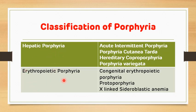Examples of hepatic porphyria are: first, acute intermittent porphyria; second, porphyria cutanea tarda; third, hereditary coproporphyria; and fourth, variegate porphyria. In the category of erythropoietic porphyria, there are three examples: first, congenital erythropoietic porphyria; second, protoporphyria; and third, X-linked sideroblastic anemia.